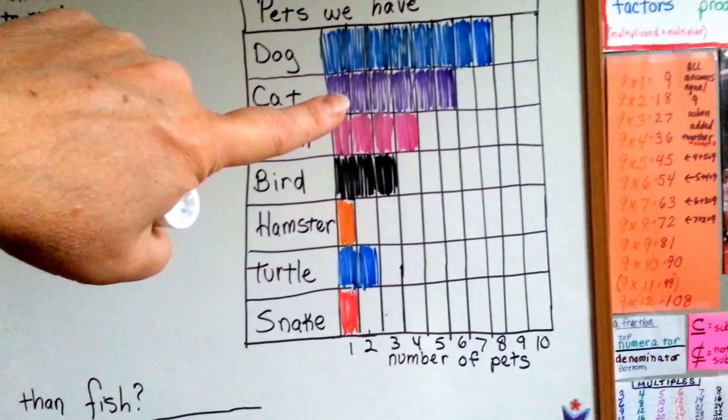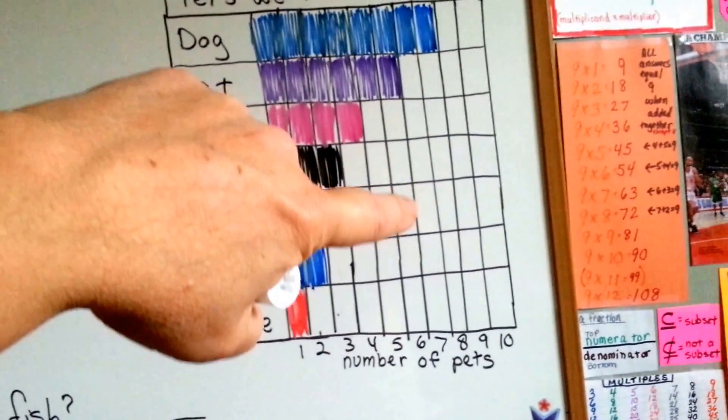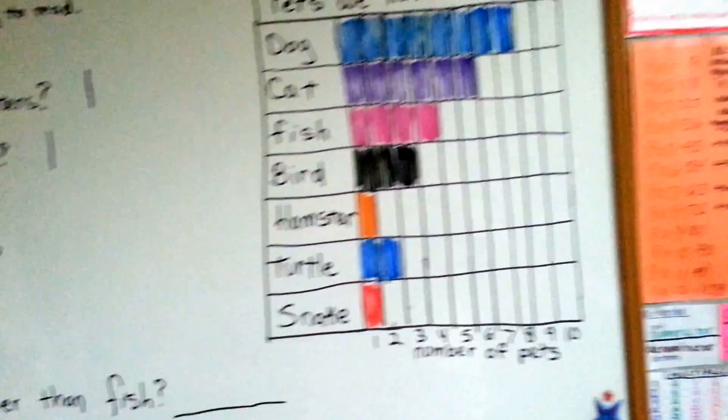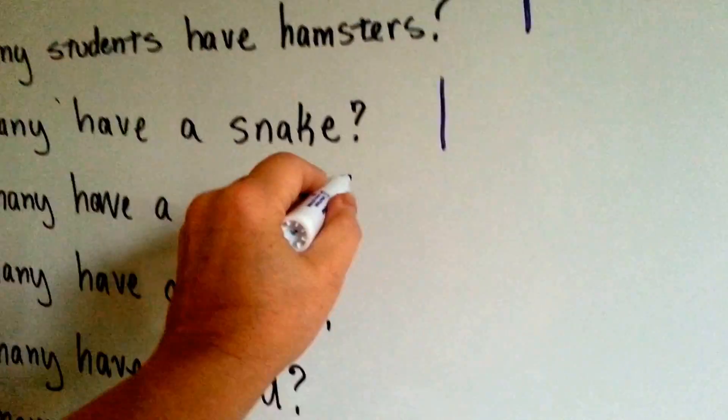How many have a cat? You follow the bar to the end and you go down and you see six. Six boxes have been filled. Six students have a cat.